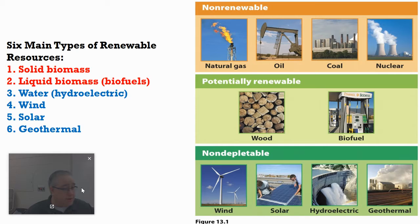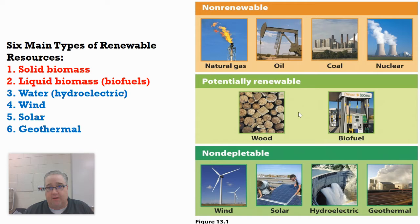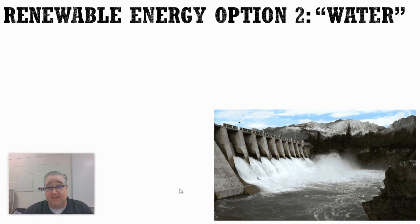Going back to this picture from yesterday, this lists all the different types of energy available to us, not only in the United States but in the world. This top row shows all of our non-renewables, which we talked about the last couple of weeks. All the resources in green are renewable resources, split into potentially renewable — things like wood, biofuels, and biomass — and the non-depletables, which we're going to focus on today.